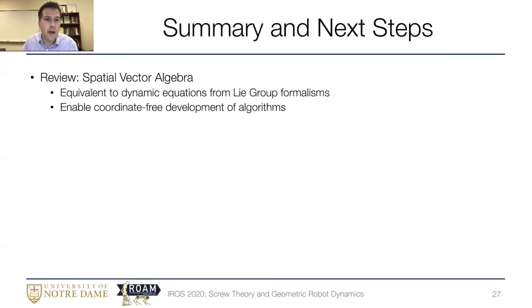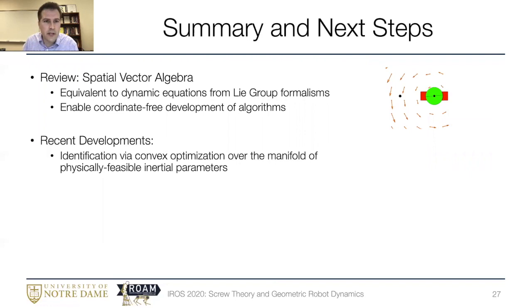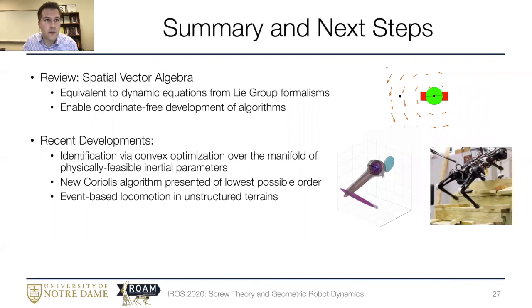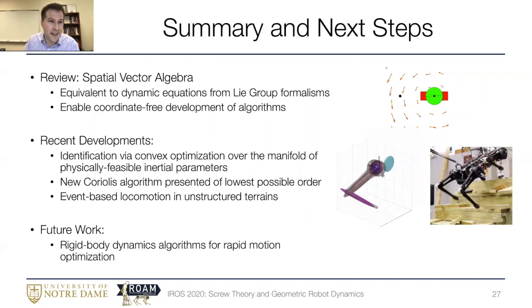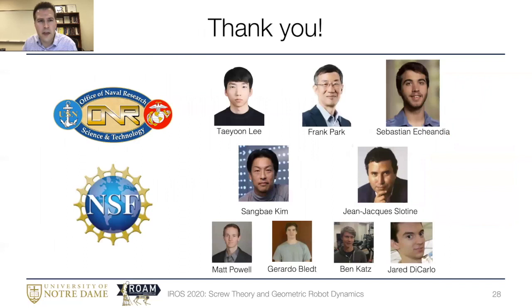So to wrap things up, I've reviewed spatial vector algebra and given this new perspective thinking about vector fields. The operations that we get at the end are equivalent to the dynamic equations that we get from the group and the algebra formalisms, and I hope that my alternate perspective has given you a different take on concepts that you already know. Likewise, with the spatial vector algebra, we can get coordinate-free development of algorithms. I then talked about recent strategies that allow us to identify inertial parameters by convex optimization over the manifold of physically feasible inertial parameters, and talked about new algorithms that allow us to rapidly calculate the dynamics of our system and help us to detect contact for event-based locomotion in unstructured terrains. I'm very excited to continue working on these rigid body dynamics algorithms. We're looking at them right now to accelerate motion optimization pipelines, and that's something that I'll be looking forward to talk to you about in the future. So with that, I'll thank all of my collaborators and funding agencies, and thank you for your attention. I appreciate it.